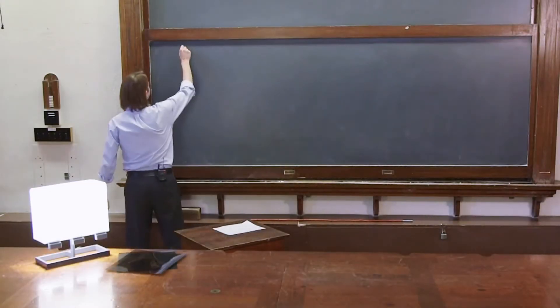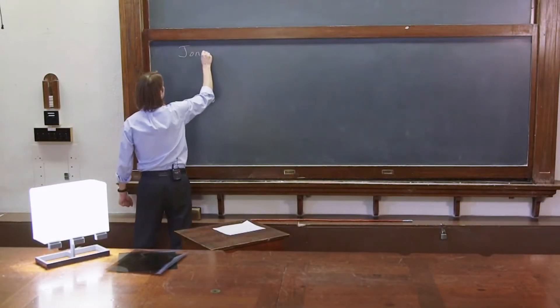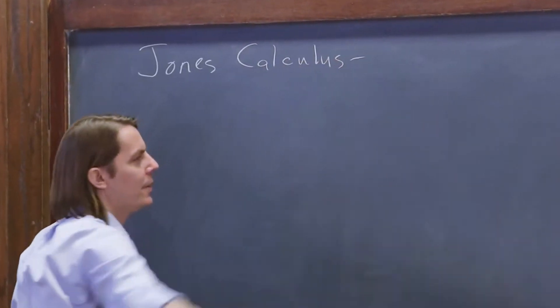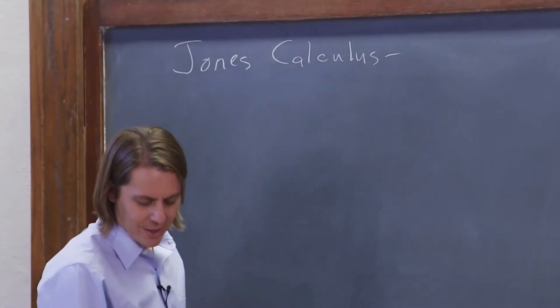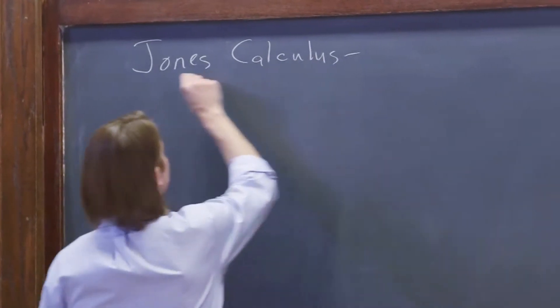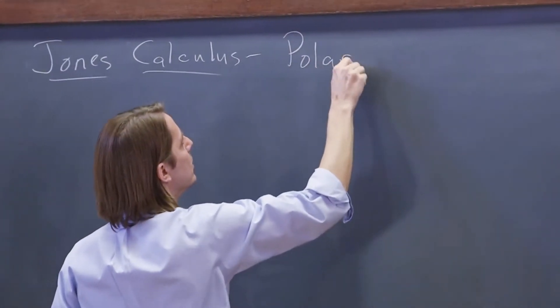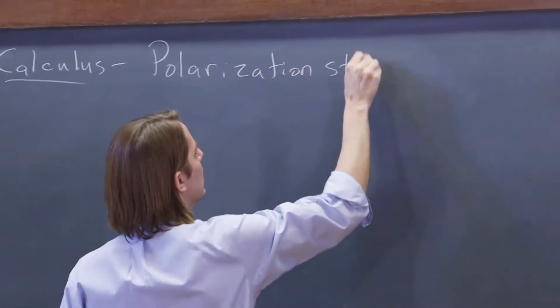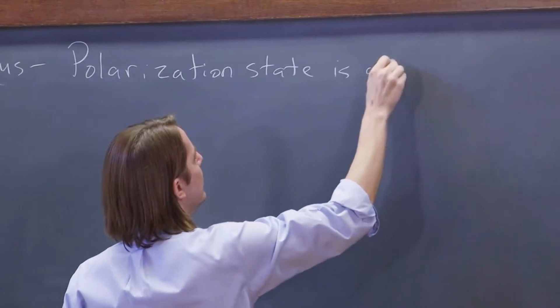Now we will think about linear polarizers in terms of Jones Calculus. What that means is, for Jones Calculus, we said the polarization state is a vector.